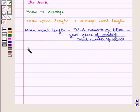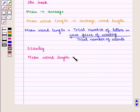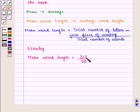So, mean word length for Stanley, which is given by total number of letters in his piece of writing, that is 310, divided by total number of words, which is 50, is equal to 6.2.